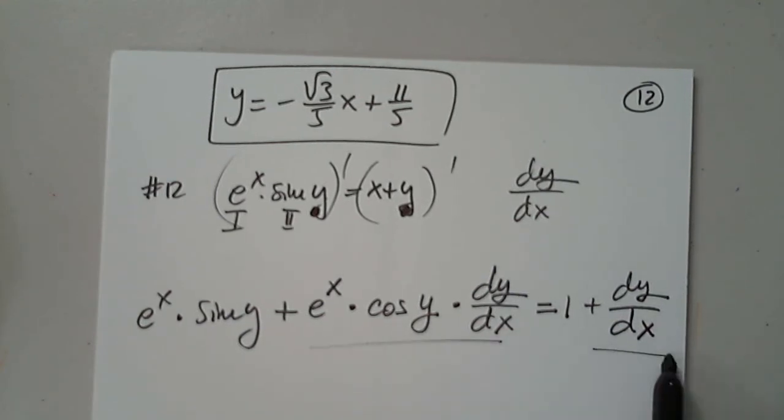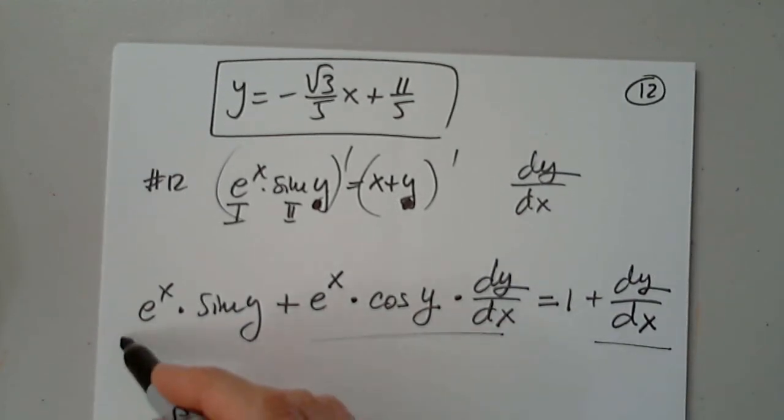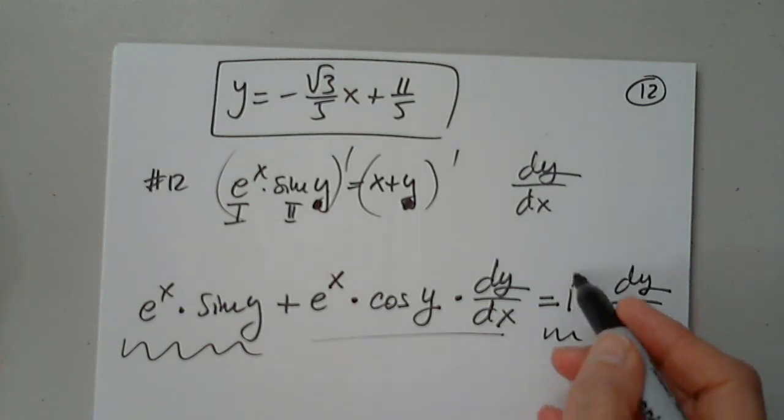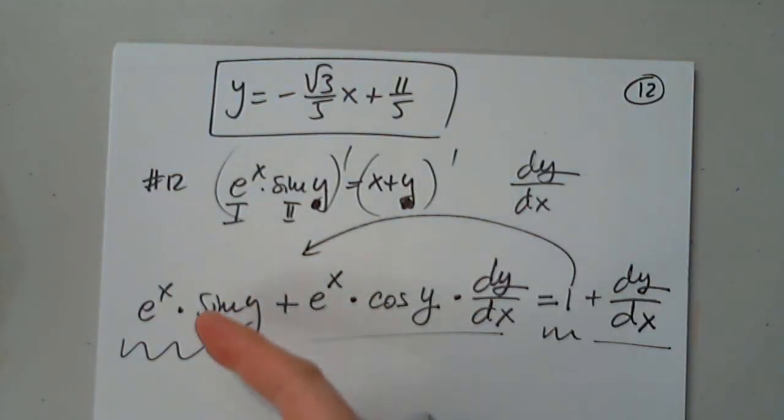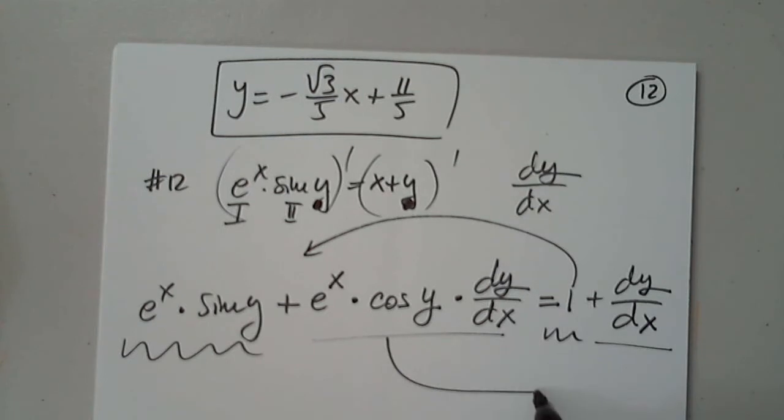Now this term and this term have the variable, but these do not. One has to move here, changing its sign. This one has to move here, changing its sign.